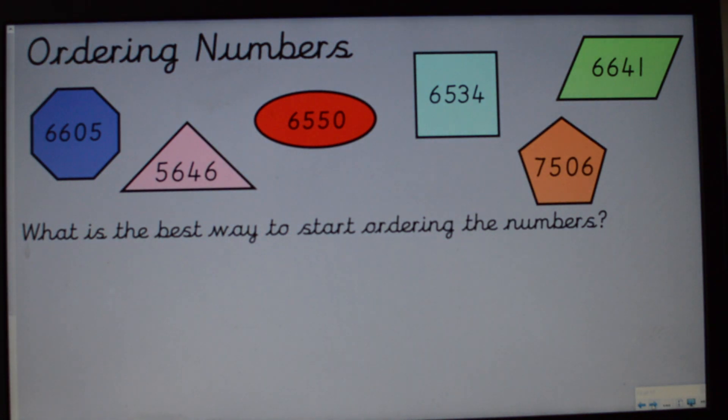Okay, last up, we're going to have a go at ordering some numbers. So you can see here, I've got some numbers on some shapes. What is the best way to start ordering the numbers? Where would you look first? Would you look at the ones, the tens, the hundreds, or the thousands column? Now, I would start looking at the thousands column first because that's how you're going to know which number is the biggest and which one is the smallest. Now, when we're not told how we want to order them, we always go in ascending order. That means going from the smallest number to the biggest number.